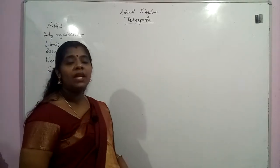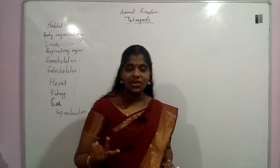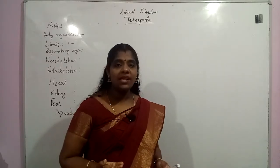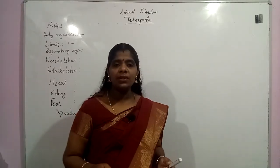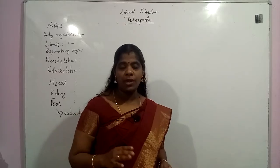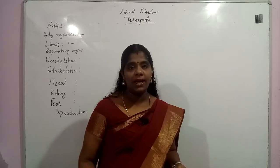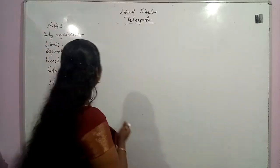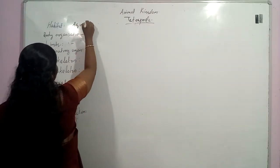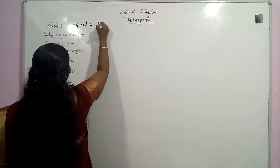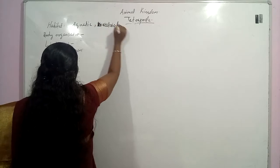The habitat of this organism, if we see, they will be seen in the terrestrial habitat, they will be present in the aquatic habitat, and they are present in the aerial habitat. There are different varieties of this Tetrapoda, so here they are aquatic, terrestrial as well as aerial.